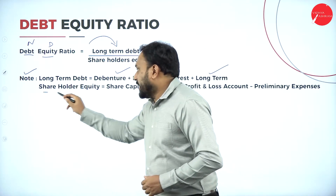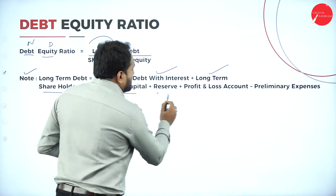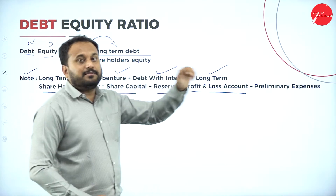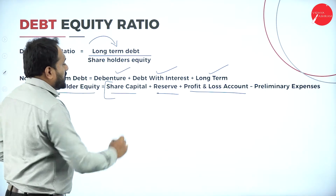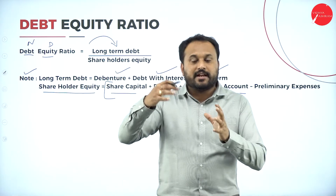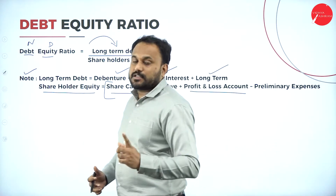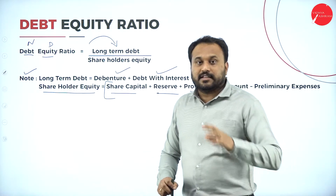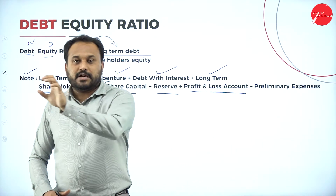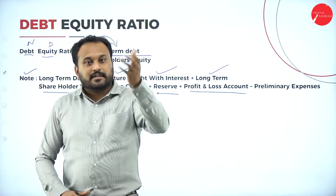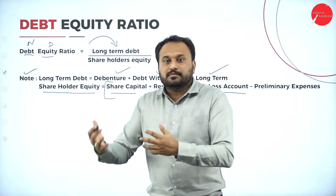What is shareholders' equity? It includes share capital, reserves, and the profit and loss account. If you have any preliminary expenses, you need to subtract them. So from the liabilities side: share capital, reserves and surplus, and profit and loss account are all part of shareholders' equity. This is what you put in the denominator — shareholders' fund — for the debt equity ratio.